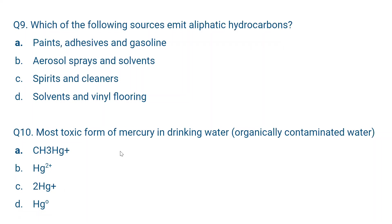Question number nine: Which of the following sources emit aliphatic hydrocarbons? Aliphatic hydrocarbons are long-chain hydrocarbons. Paints, adhesives, and gasoline (petrol) emit aliphatic hydrocarbons. Aerosol sprays and solvents emit aromatic hydrocarbons. Spirits and cleaners also emit aromatic hydrocarbons. Solvents and dry-cleaning clothing also emit aromatic hydrocarbons. So basically paints, adhesives, and gasoline are the sources of aliphatic hydrocarbon emissions.